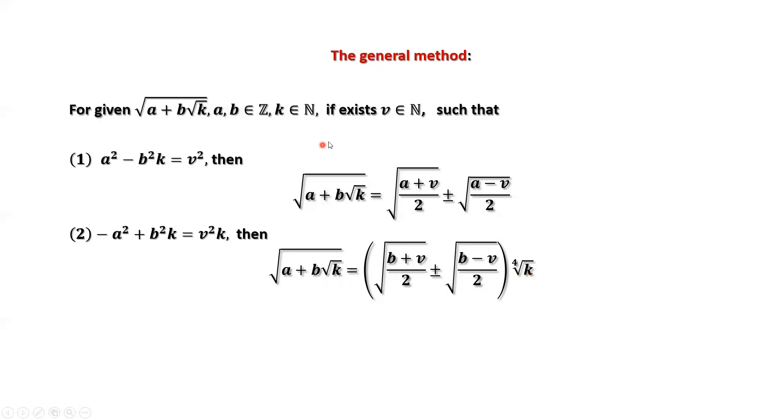Pay attention to this condition. If we have a v, a positive number satisfying condition one or condition two, maybe for a given problem this kind of v does not exist. That means this cannot be simplified using this method.